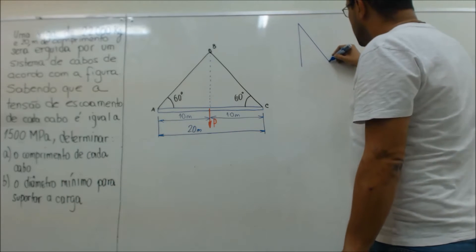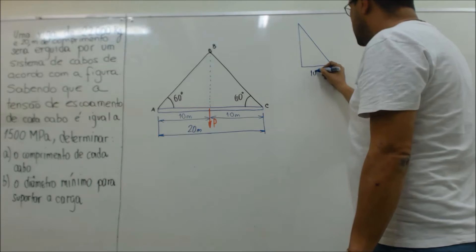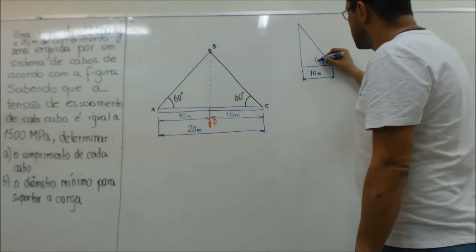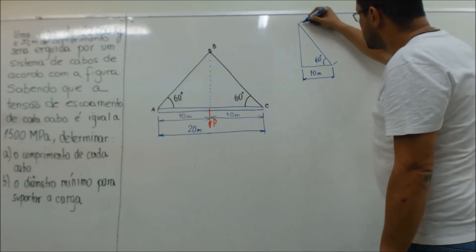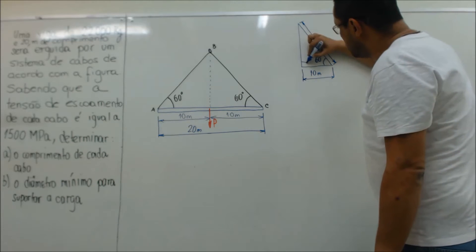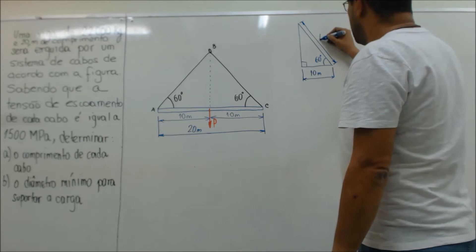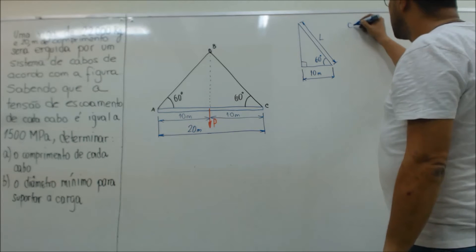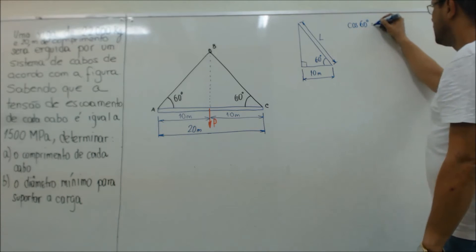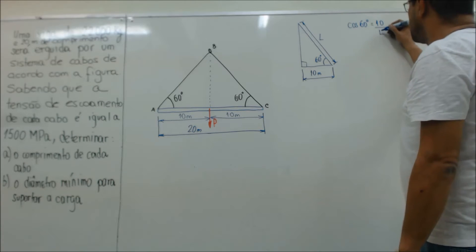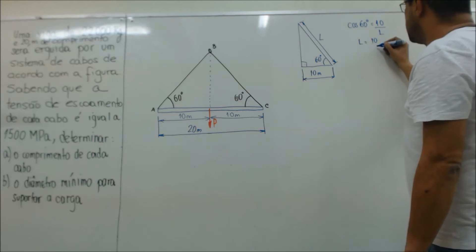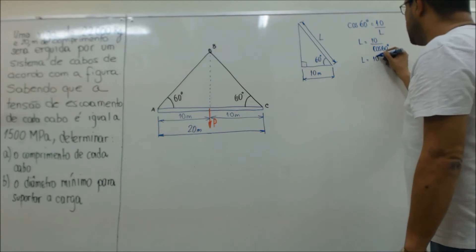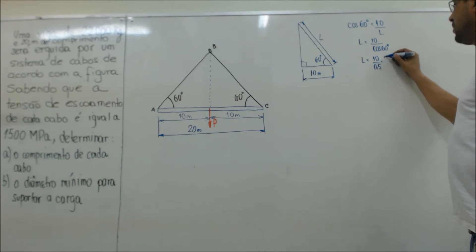Com isso nós conseguimos fechar um triângulo, de forma que 10 metros está localizado nesse cateto aqui, na parte inferior. Eu tenho esse ângulo de 60 graus e preciso descobrir essa distância. Como aqui é um triângulo retângulo, para descobrir esse comprimento L eu tenho um cateto adjacente e uma hipotenusa. Então eu vou usar: cosseno de 60 graus é igual ao cateto adjacente dividido pela hipotenusa. Então L é igual a 10 dividido por cosseno de 60, que é igual a 10 dividido por 0,5.